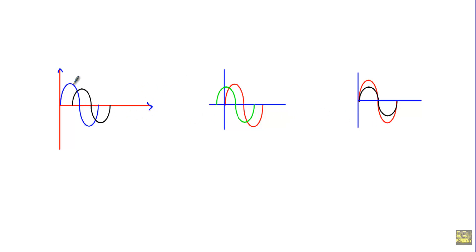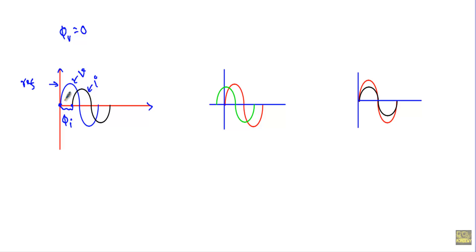Now let's consider two alternating waveforms. The blue waveform indicates voltage v and the black waveform indicates current i. The origin of the voltage is at zero position, so φv equals zero. The origin of the current i is φi behind the reference point. Therefore, the origin of the current is φi behind the origin of the voltage, so voltage v leads current i by φi.